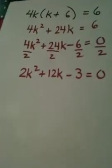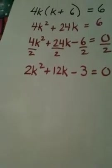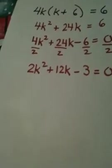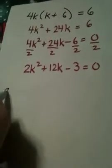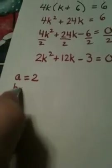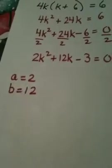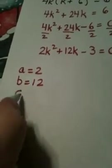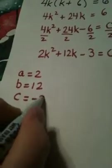But, again, if you're in the middle of a test and you can't see that it factors fast, maybe it doesn't. Just move on to the formula. So, in this case, a is 2, the leading coefficient, b is 12, and c is a negative 3.